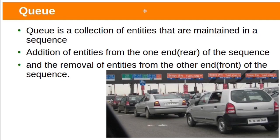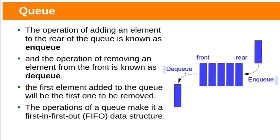Let's see a quick recap. Queue is a collection of entities that are maintained in sequence. From one end, rear, elements will be inserted into Queue. From the other end, front, deletion of elements will be done. Adding elements at rear is called enqueue and removing elements at front is called dequeue. The first added element will be removed first.